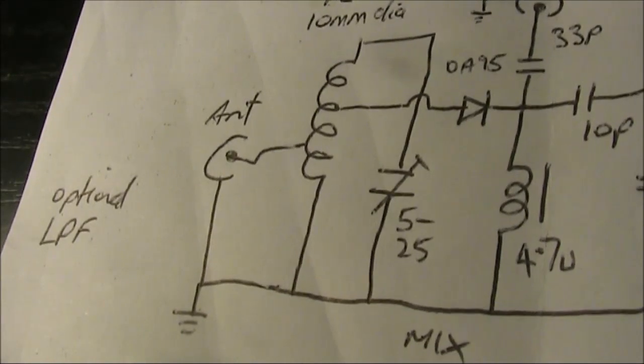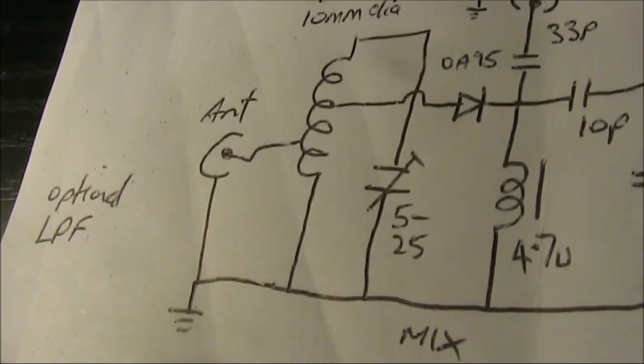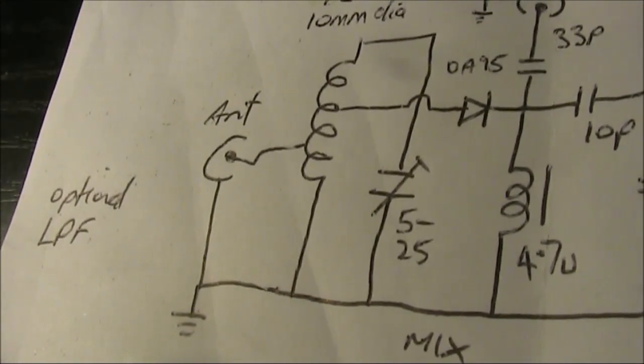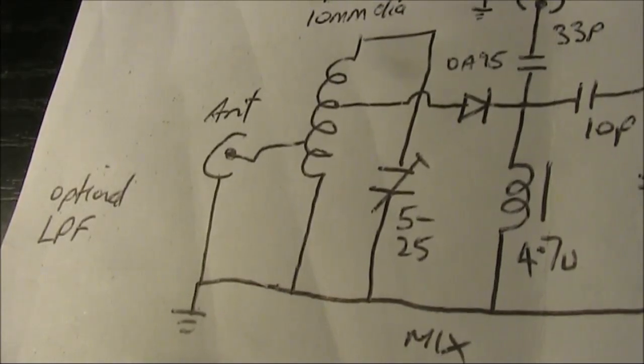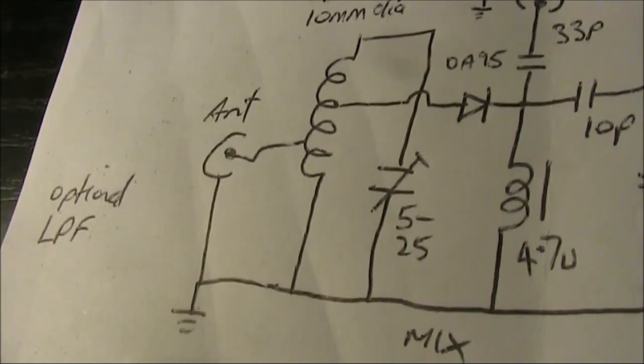Or you might have a low pass filter. Probably several sections required, resonant at 70MHz. Another possibility is using a magnetic loop antenna.